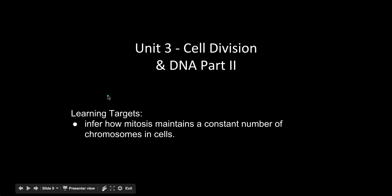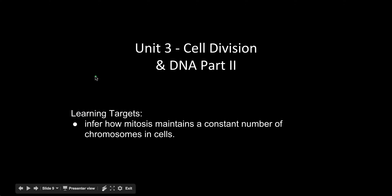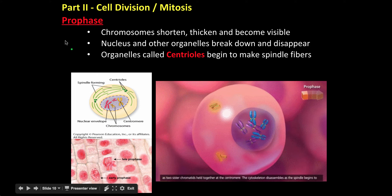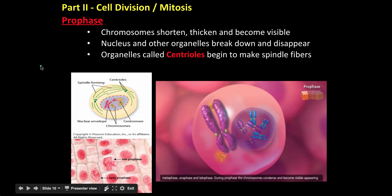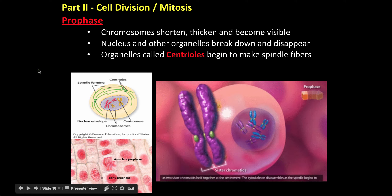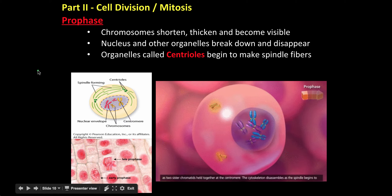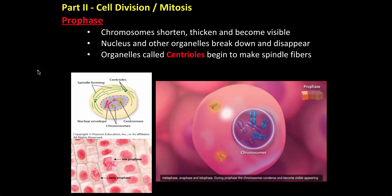Today's topic is cell division and mitosis, focusing on the second set of learning targets — specifically how mitosis maintains a constant number of chromosomes in a cell. This is part two: mitosis cell division. Mitosis is the part of the cell cycle that allows our cell to actually split into two and copy itself.